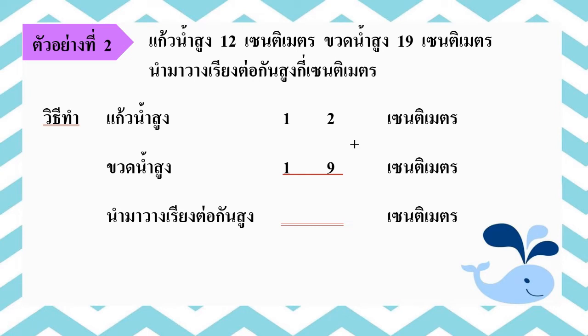นำมาวางเรียงต่อกันสูง หน่วยเป็นเซนติเมตร จากนั้นเราจะเริ่มหาผลบวกที่หลักหน่วยก่อนคือ 2 บวก 9 เท่ากับเท่าไรคะเด็กๆ ถูกต้องค่ะ เท่ากับ 11 ใส่ 1 ให้ตรงกับหลักหน่วย และทด 1 ในหลักสิบ จากนั้นหาผลบวกในหลักสิบคือ 1 บวก 1 เท่ากับเท่าไรคะเด็กๆ ถูกต้องค่ะ เท่ากับ 2 อย่าลืมรวมกับตัวทดอีกหนึ่ง เท่ากับ 3